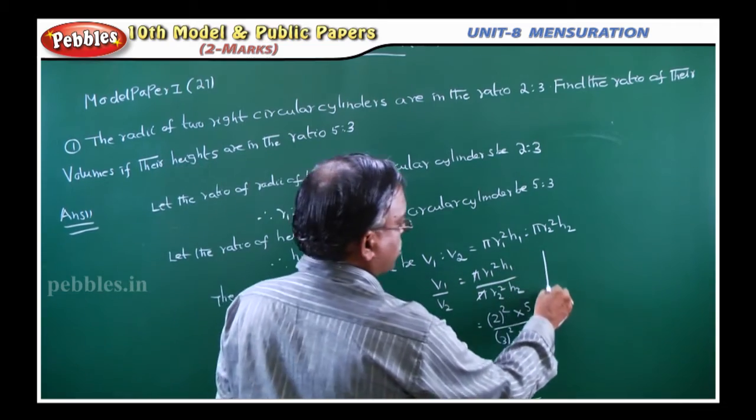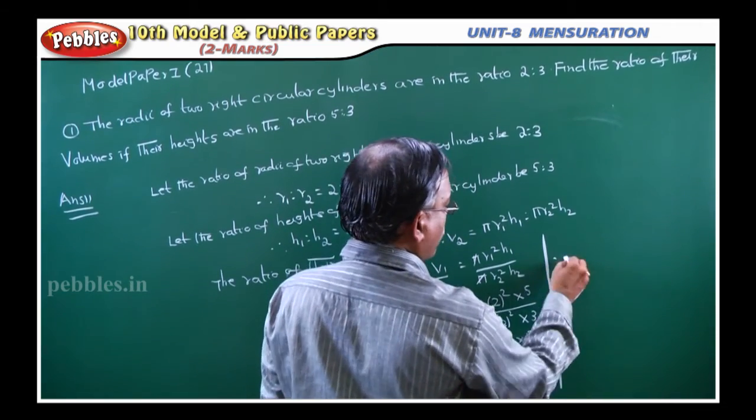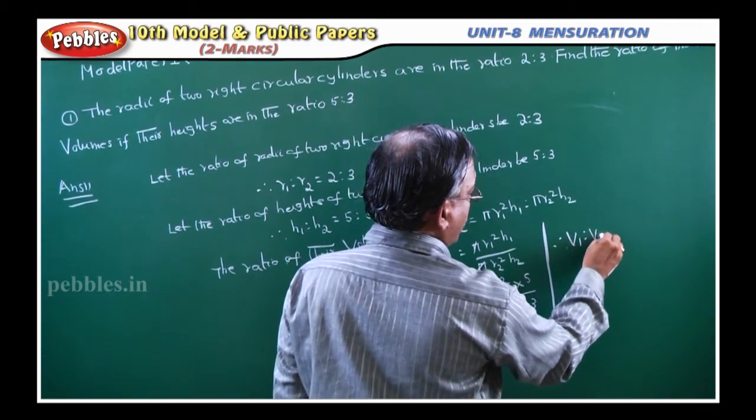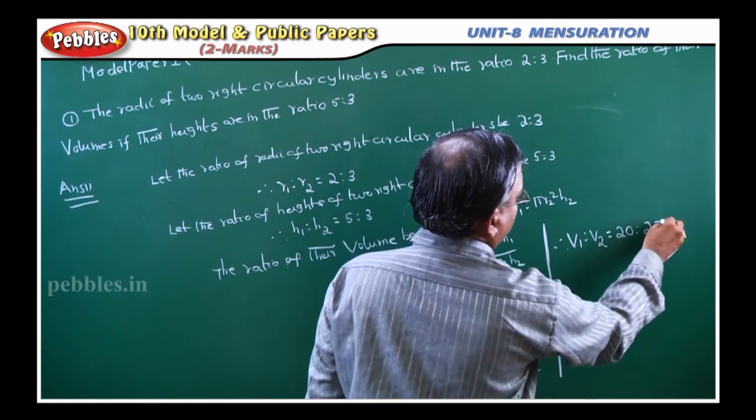Therefore, conclusion: v1 is to v2 is equal to 20 is to 27.